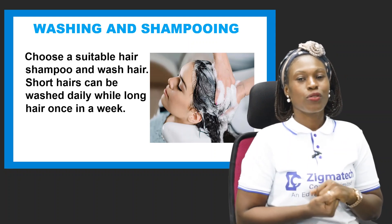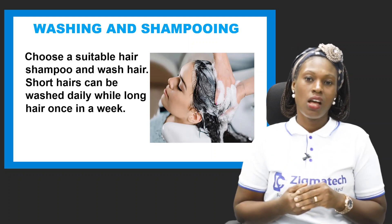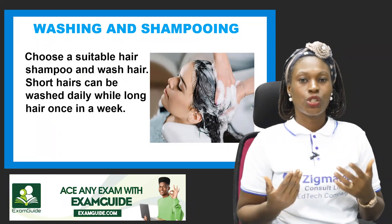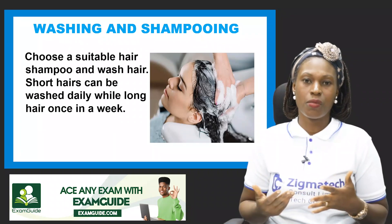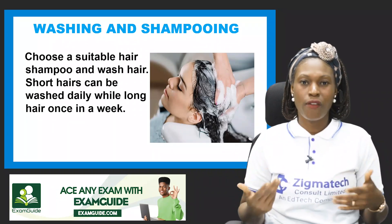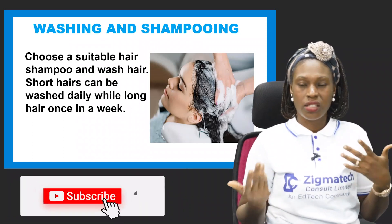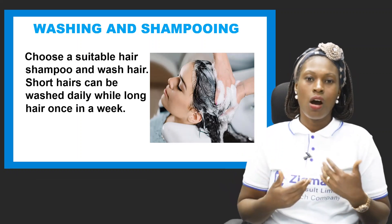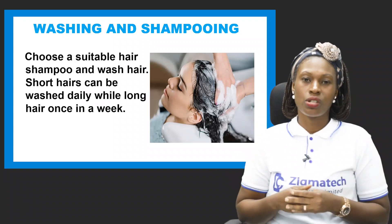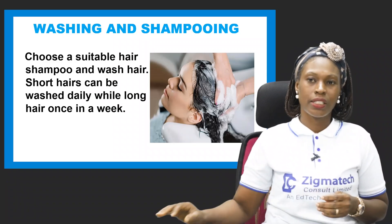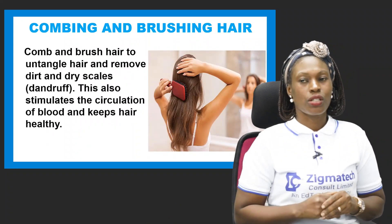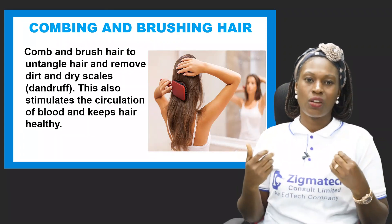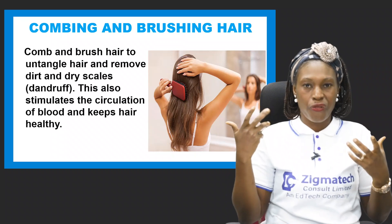Now, ways of caring for the hair. The first is washing with shampoo — choose a suitable shampoo that matches your hair type. If you have short hair, like a low cut, you may wash your hair every day. If your hair is long, you may wash weekly or every two weeks. As much as you can, wash your hair to keep it healthy. Another thing to do is comb and brush your hair regularly.